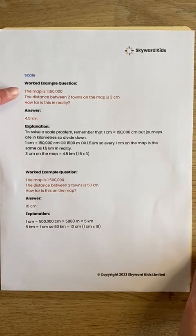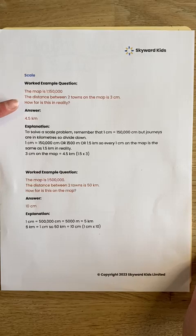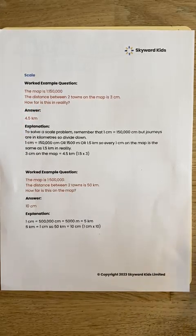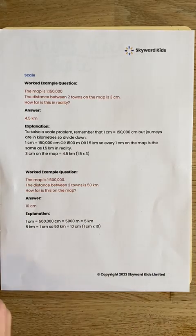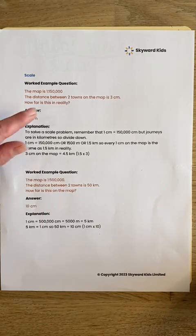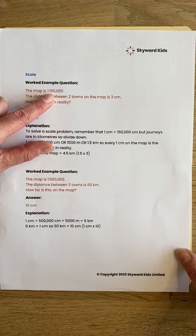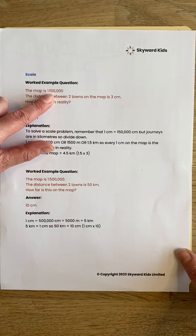So we're told that the map is 1 to 150,000. The distance between two towns on the map is 3 centimetres. And we're asked, how far is this in reality? Now, a scale like this is normally found on a map to show us the distance on a map, how much it would be in reality. And in this case, it means that 1 centimetre on a map is actually 150,000 centimetres in reality.